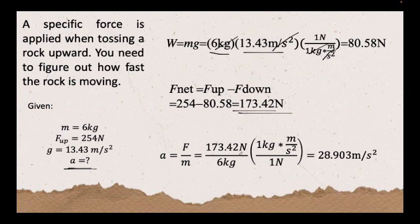So, to cancel out the Newton, we have to multiply it by 1 kg m per second squared to cancel out the like units or the same units. So, 173.42 N divided by 6 kg and we will have the answer of 28.903 m per second squared.